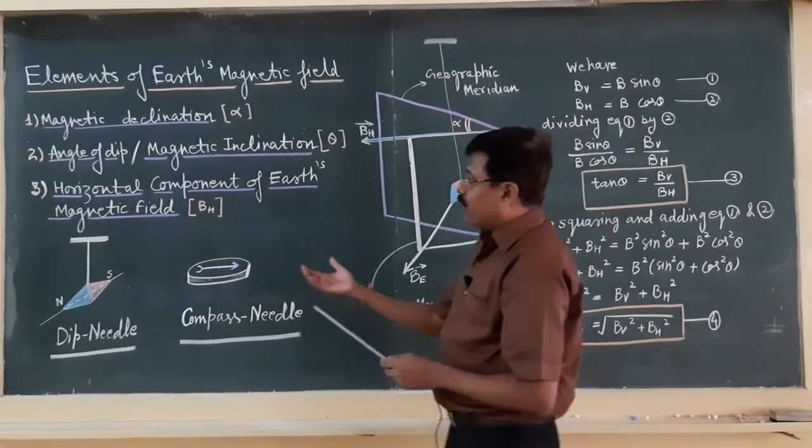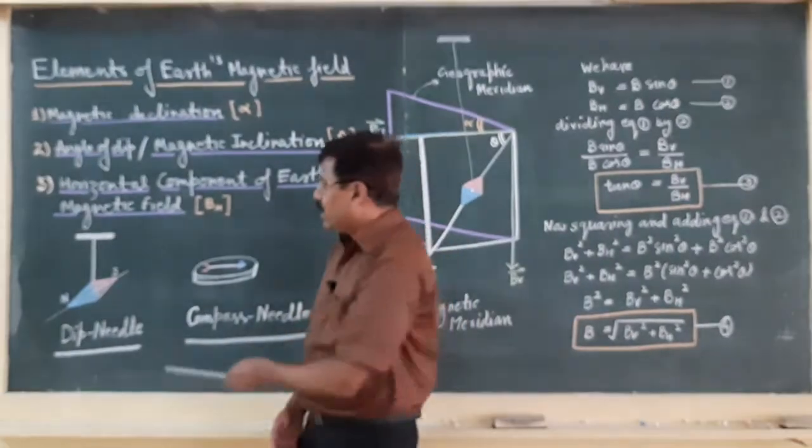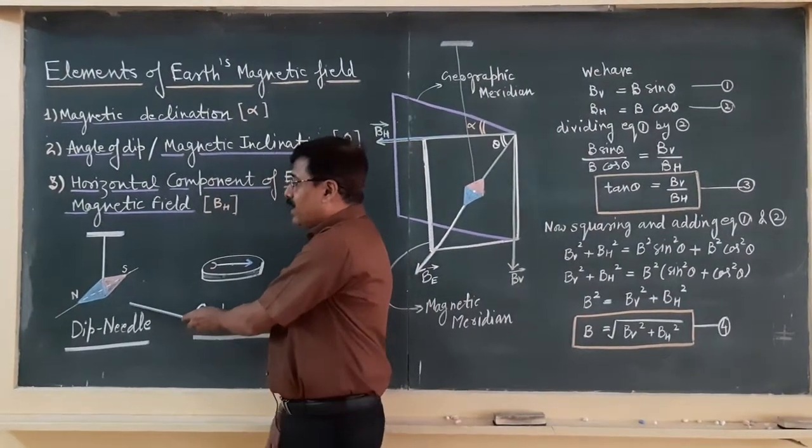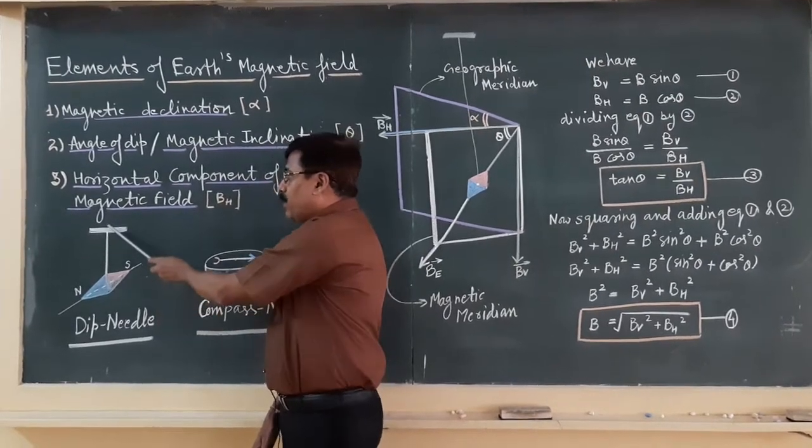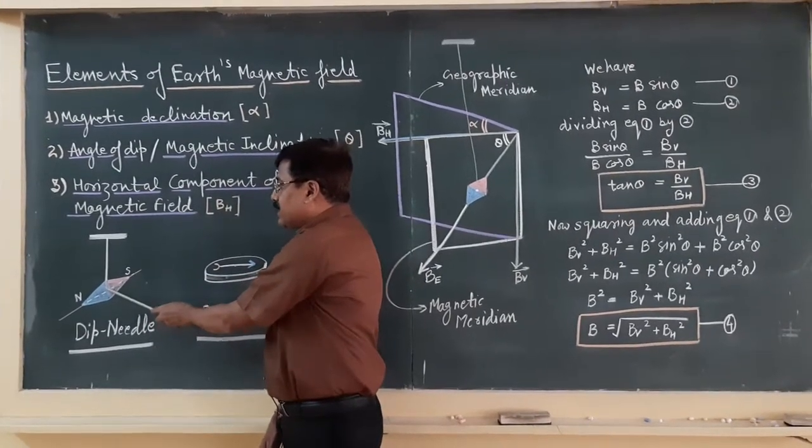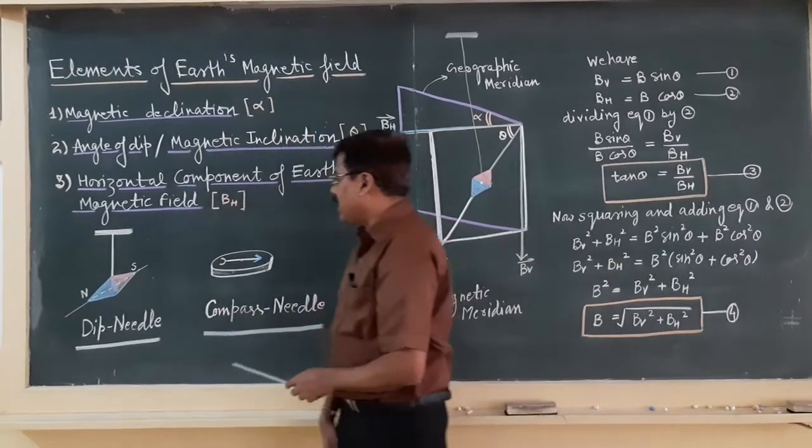If you come to the concept of the needle, there are two types of needle. The first one is the dip needle. This needle is free to rotate in the vertical plane about this axis. It can rotate in a vertical plane.